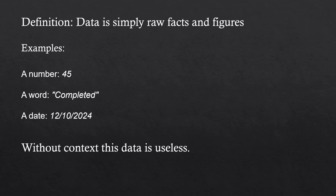Some examples of data are things like a number — the number 45, that is a piece of data. A word could be data, just the word 'completed,' or a sentence — that is also data. A date could be data as well, like 12/10 of 2024. Now, the thing about data is that data is everywhere — it's in everything we do all the time — but without collecting it, without context of what this data actually means, it's basically useless.